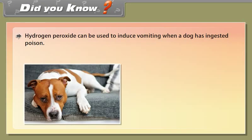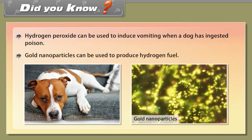Did you know? Hydrogen peroxide can be used to induce vomiting when a dog has ingested poison. Gold nanoparticles can be used to produce hydrogen fuel.